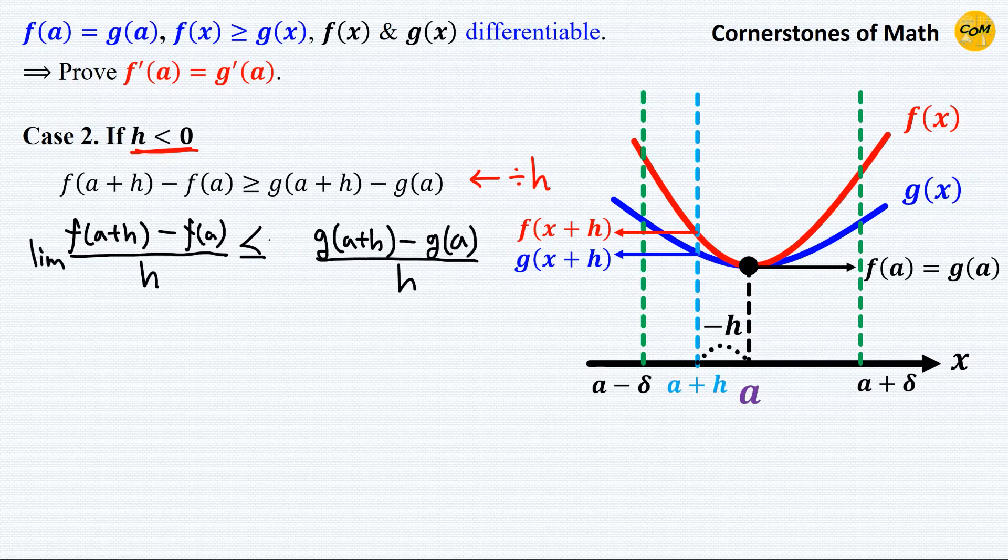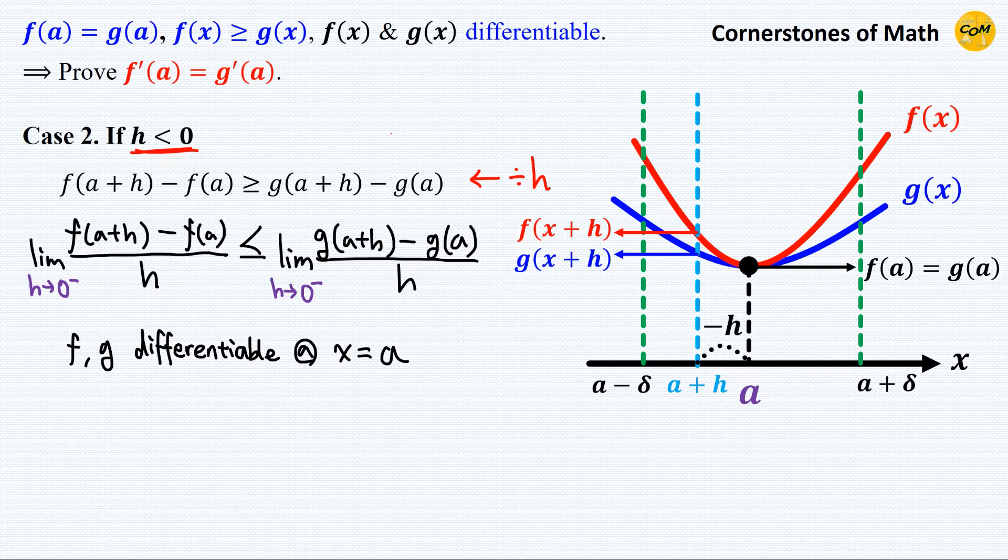And now the limit is h approaching 0 from the left. And again, since both functions are differentiable at x equals a, we can just replace them with derivatives. So we have f'(a) is less than or equal to g'(a). So we have obtained this.